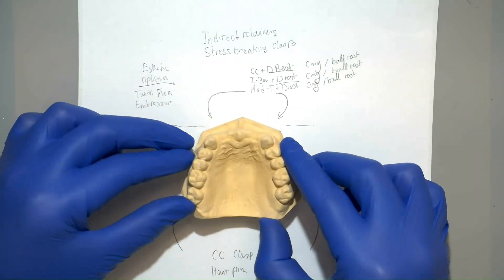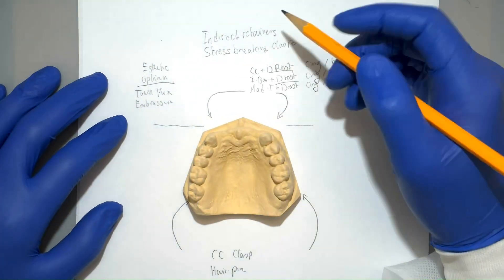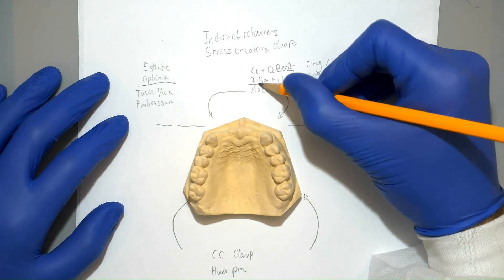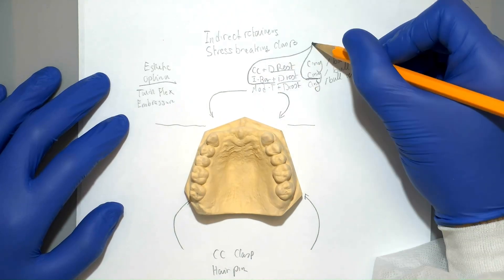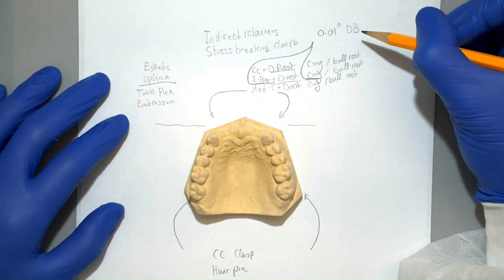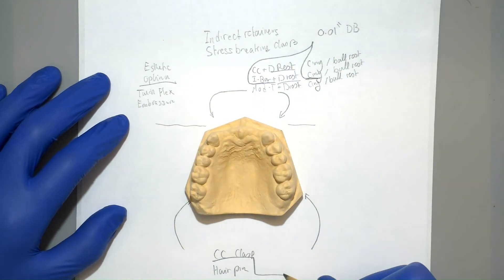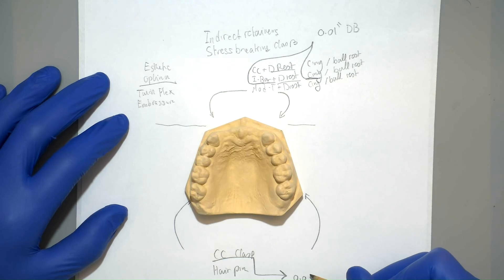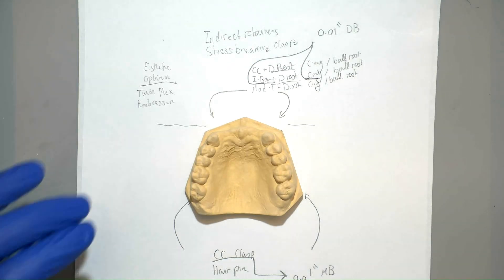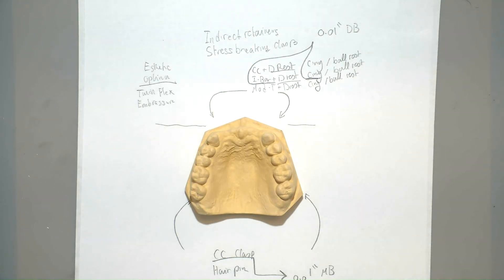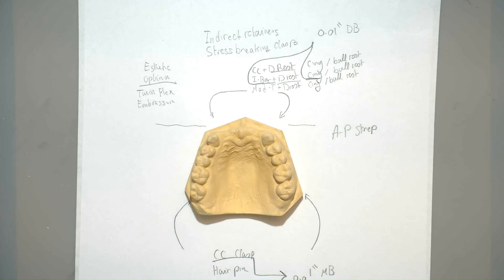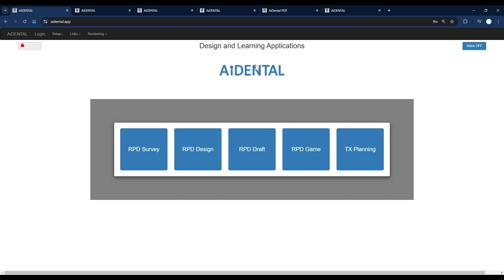But for now, let's focus on the traditional clasps, which would be an eye bar with a cingulum rest, which means we'll be looking for a 0.01 inch undercut on the distal buccal. And for the back, we'll be looking for a 0.01 inch undercut on the mesio buccal. And for the major connector, we'll use an AP strap or a horseshoe.